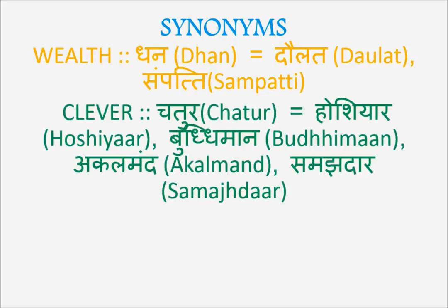Clever: the word for clever in Hindi is 'chatur.' Another word is 'hoshyaar.' Other words include 'buddhiman,' 'akalmand,' and 'samajhdaar.' 'Samajh' means sense, so 'samajhdaar' refers to one who has the right sense. 'Akal' is intelligence, so 'akalmand' means intelligent. 'Buddhi' is also intelligence, giving us 'buddhiman.'